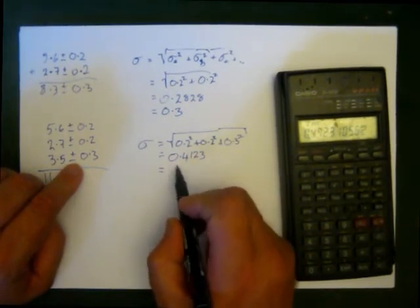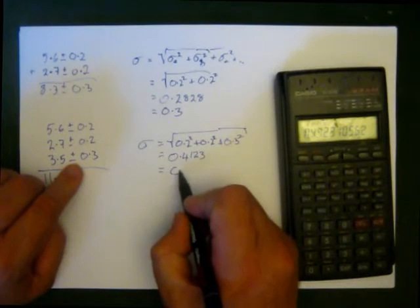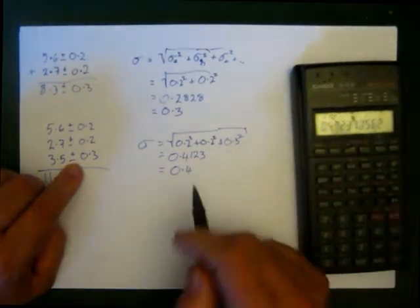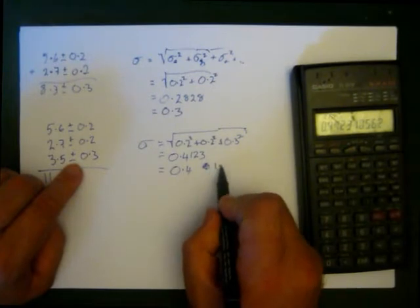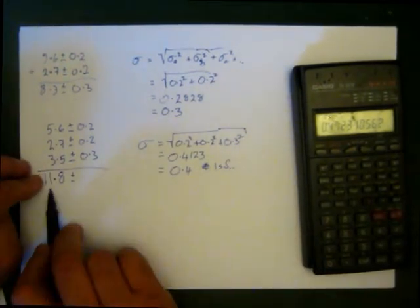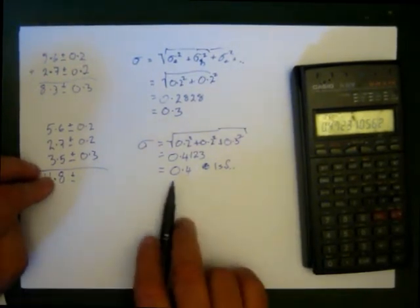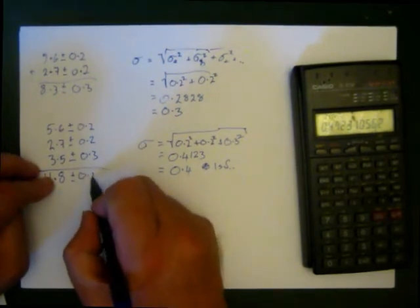Remember, we only give standard to one significant figure, 0.4, one significant figure. So this is going to be 11.8 plus or minus 0.4.